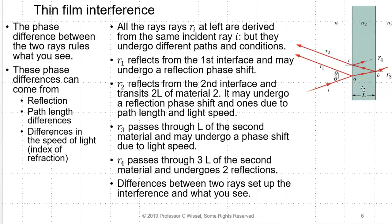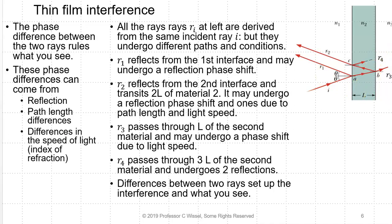Ray R3 passes through the length of the material. L of the second material may undergo a phase shift due to varying light speed in different materials. Ray R4 goes through, bounces off this surface, bounces off that surface, and comes out again — passing through 3L of the second material and undergoing two reflections. Differences between these rays may set up the interference of what you see. R1 and R2 interfere with each other setting up the different colors you see in reflection. R3 and R4, the transmitted rays, can also interfere with each other and set up different colors.